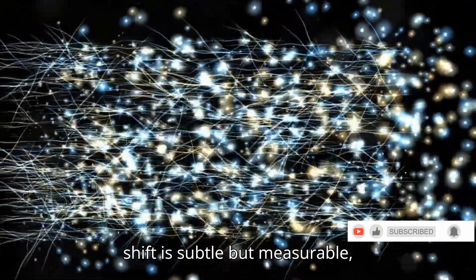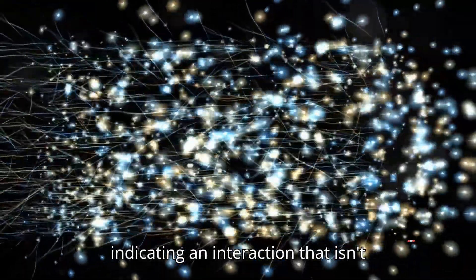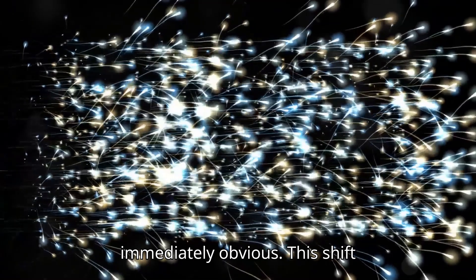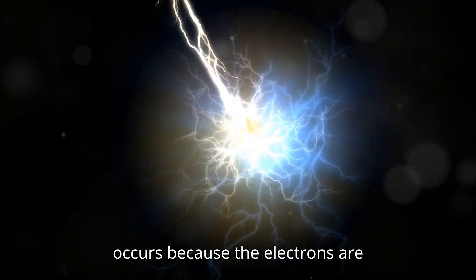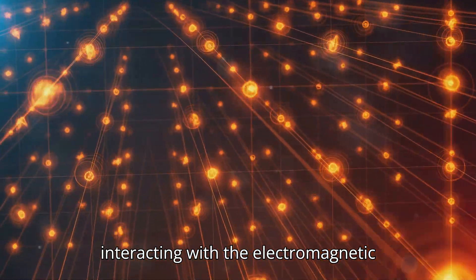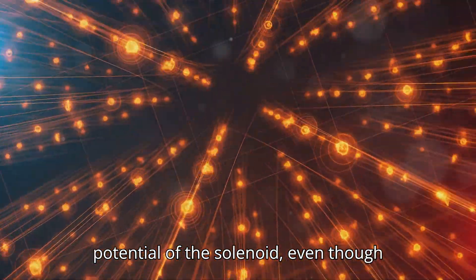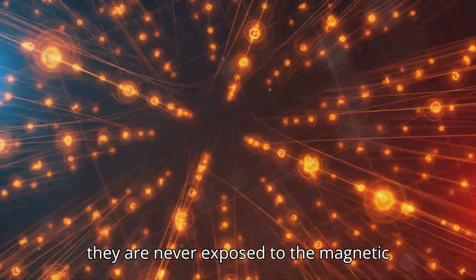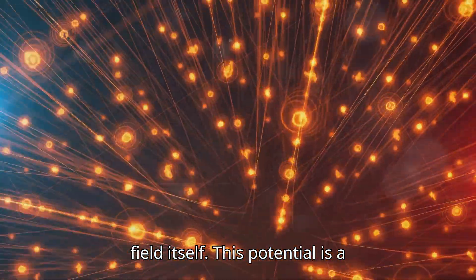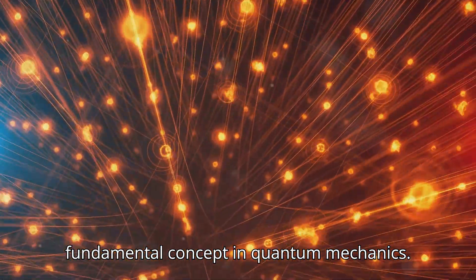This shift is subtle but measurable, indicating an interaction that isn't immediately obvious. This shift occurs because the electrons are interacting with the electromagnetic potential of the solenoid, even though they are never exposed to the magnetic field itself. This potential is a fundamental concept in quantum mechanics.